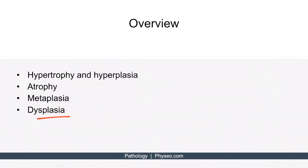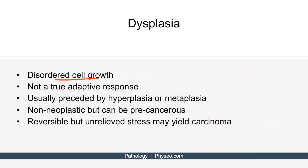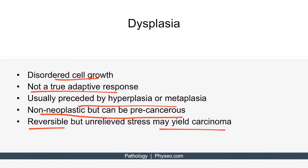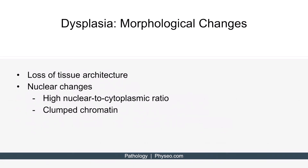Now let's finish up by discussing dysplasia. In simple terms, dysplasia refers to disordered cell growth. Unlike the other growth adaptations, dysplasia is not a true adaptive response. Dysplasia is usually preceded by long-standing pathologic hyperplasia or metaplasia. Dysplasia is non-neoplastic, but it can be precancerous. For example, CIN, or cervical intraepithelial neoplasia, is a dysplastic precursor to cervical cancer. Mild and moderate dysplasias, which do not involve the entire thickness of the epithelium, may regress with alleviation of the inciting stress. However, severe dysplasia becomes irreversible and may progress to carcinoma. Dysplastic cells are characterized by loss of tissue architecture and nuclear changes, including an increased nuclear-to-cytoplasmic ratio, with the nucleus increasing in size at a greater rate than the cytoplasm, and chromatin clumping within the larger nucleus.